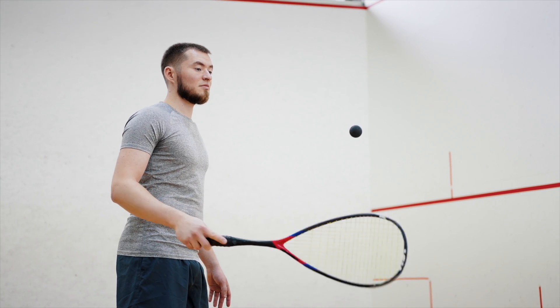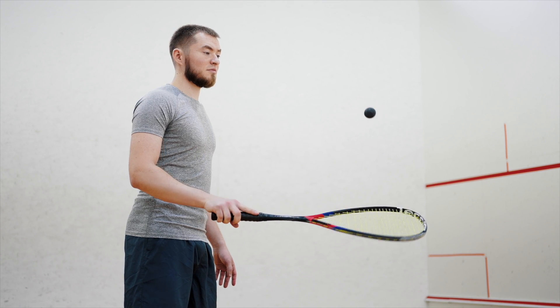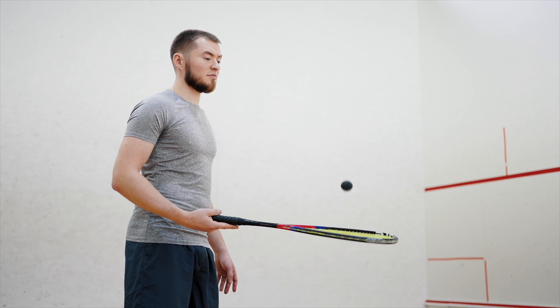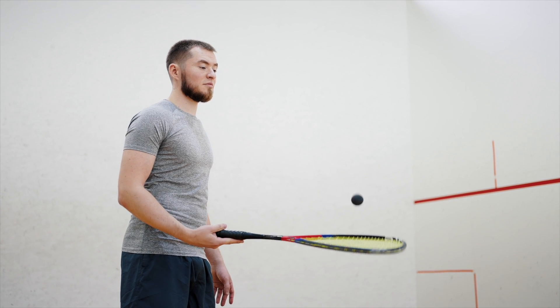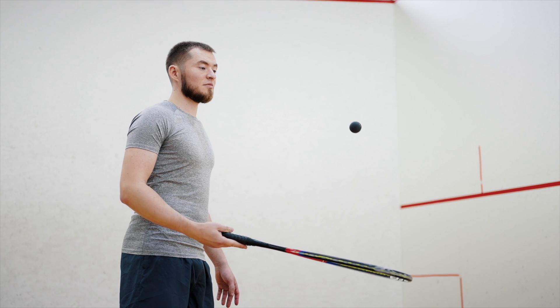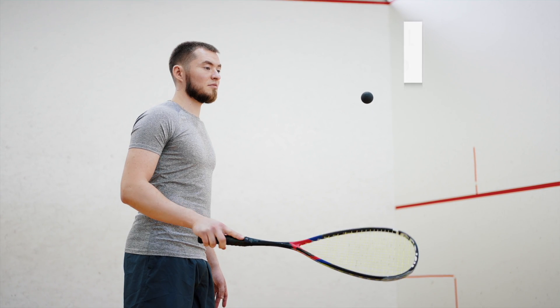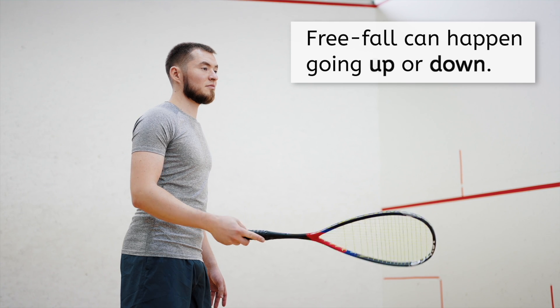Gravity slows it at a rate of 9.8 meters per second squared on the way up until it reaches a velocity of zero at the top of its path. Then, gravity speeds it up at a rate of 9.8 meters per second squared on the way down until it hits his racket again. So, free fall can happen on the way up and down.